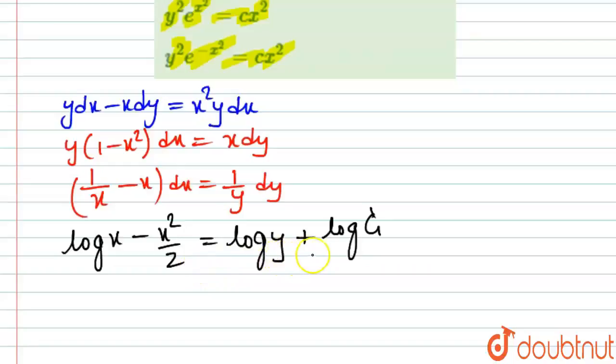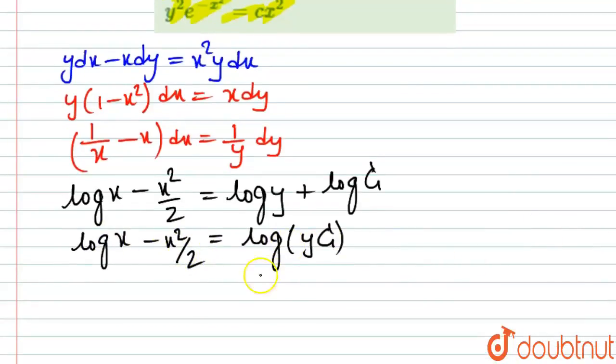This would become log of y c. This would become log of x minus x square by 2. Just taking this one there and this one here, this becomes log of x minus log of y c. Log m minus log n, that is log of m by n.